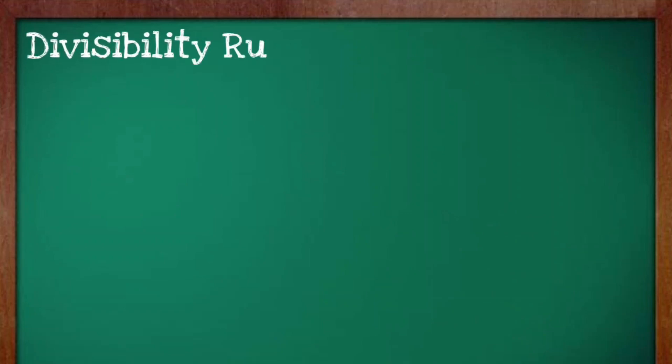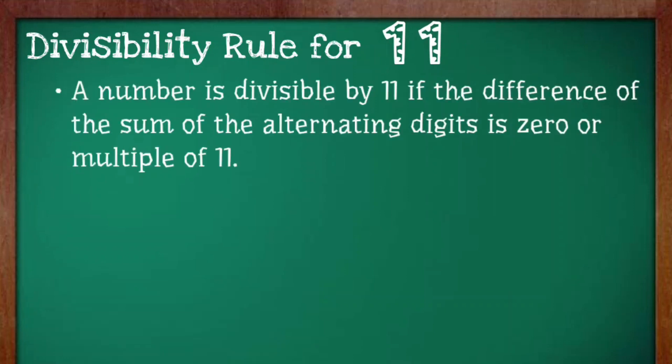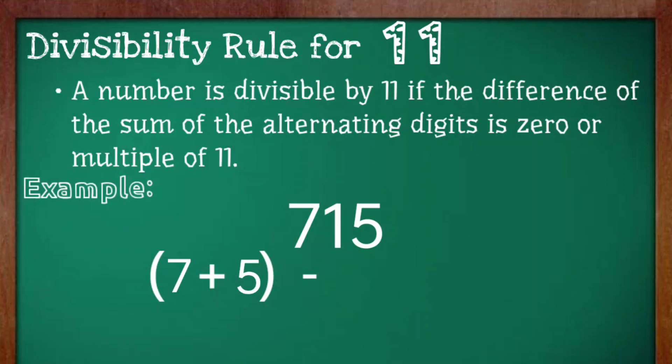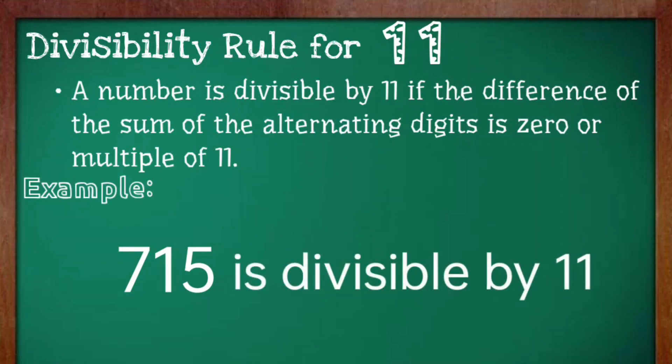Finally, a number is divisible by 11 if the difference of the sum of the alternating digits is 0 or a multiple of 11. For example, 715. We will be adding 7 and 5 and subtracting it by the alternating number, which is 1. 7 plus 5 is equal to 12 minus 1, which is equal to 11. Therefore, 715 is divisible by 11.